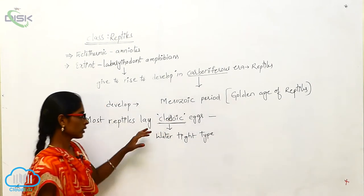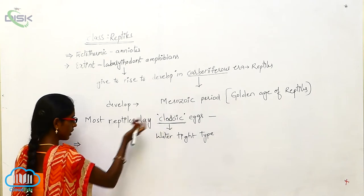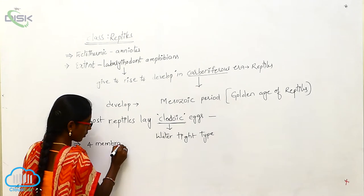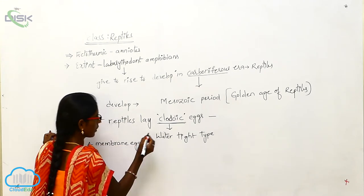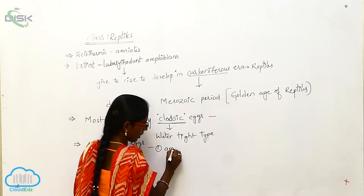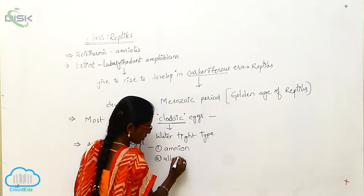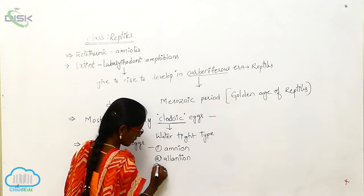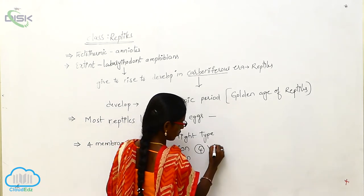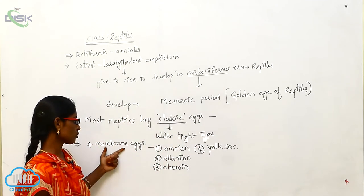These cleidoic eggs are four-membrane eggs. Those four membranes are: first, amnion; second, allantois; third, chorion; and fourth, yolk sac. These are the four membranes of the eggs.